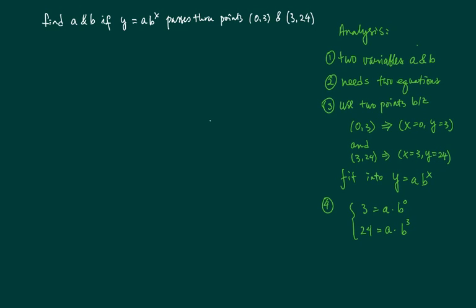So when x and y fits into this equation, that's where we're going to drag the two equations out from. When x is equal to 0, y is equal to 3, that's the first equation here. When x is equal to 3, y is equal to 24, that's the second equation.